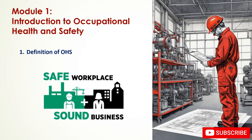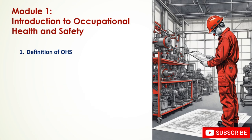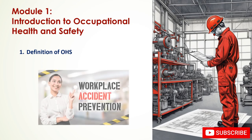These preventive measures include hazard identification and risk assessment, control measures, emergency preparedness, and employee training, as well as monitoring and analyzing health and safety performance. The ultimate goal of OHS is to prevent work-related injuries, illnesses, and fatalities, and to promote a positive and productive workplace culture.